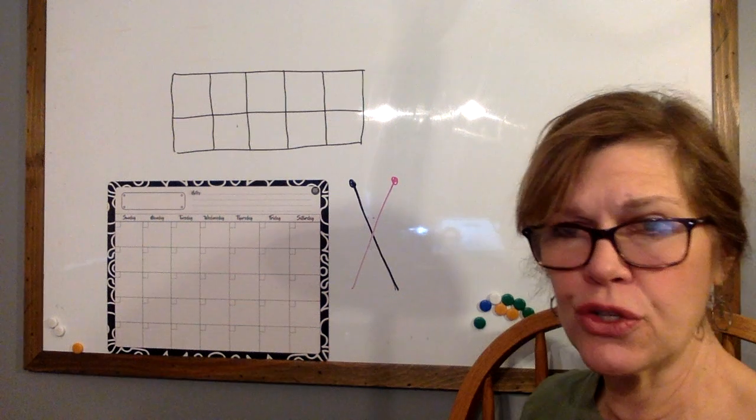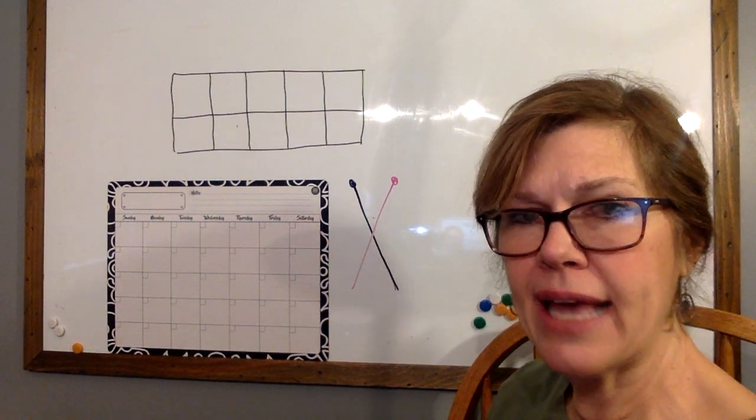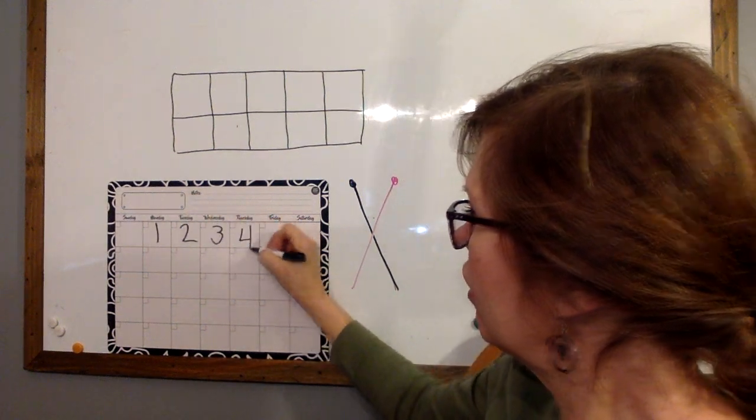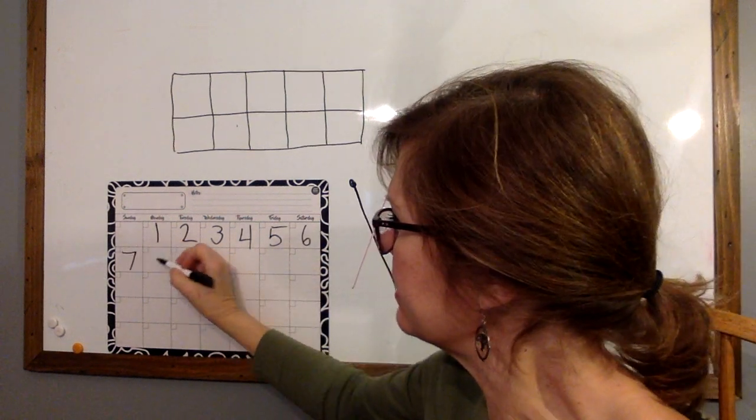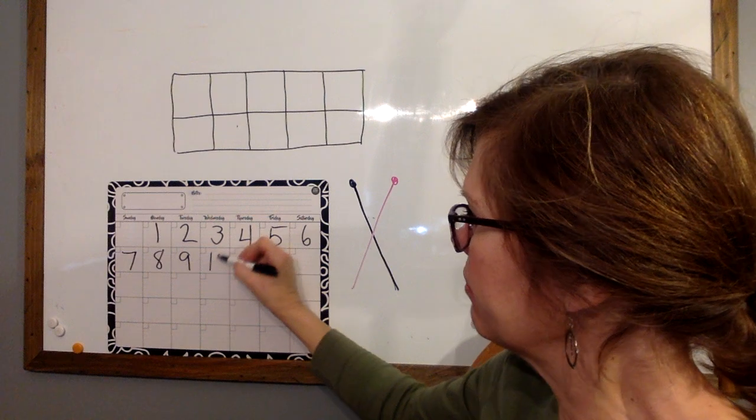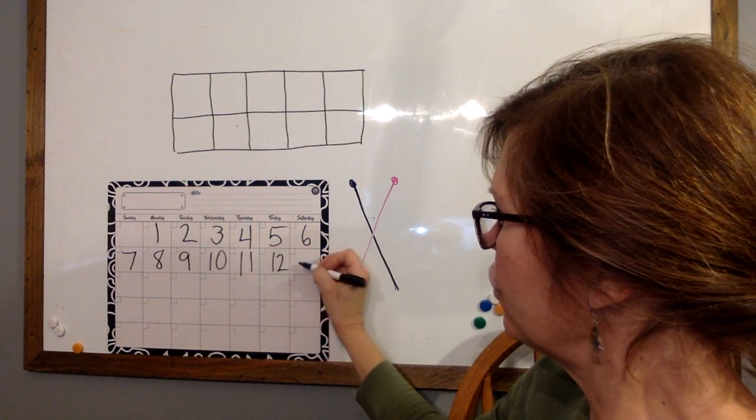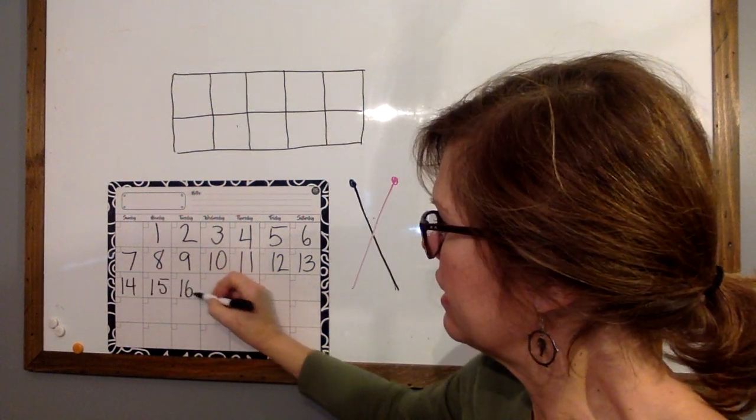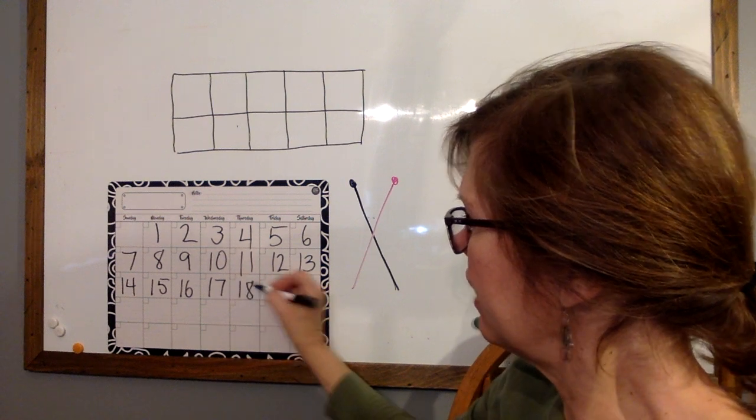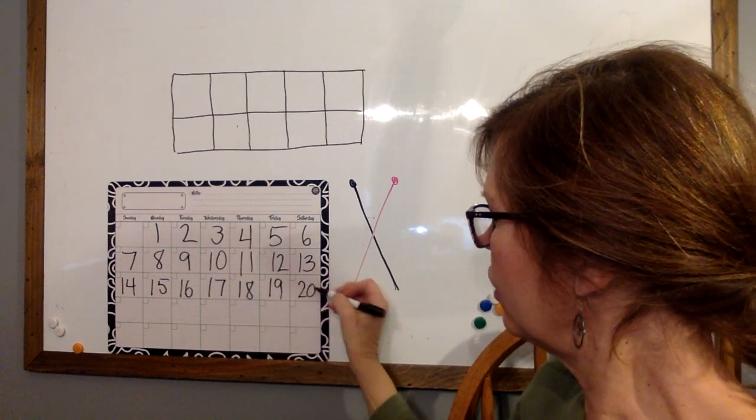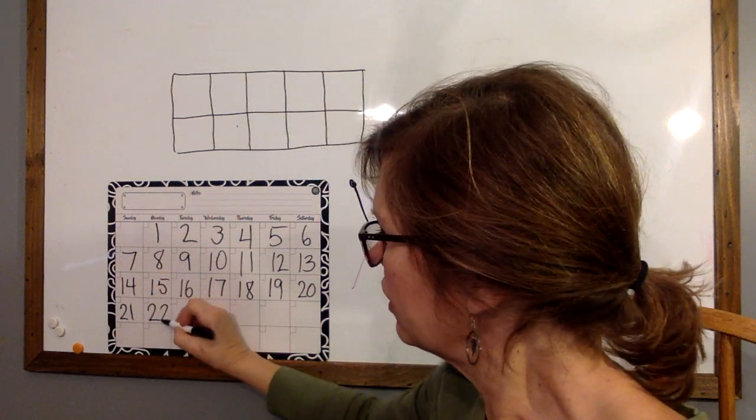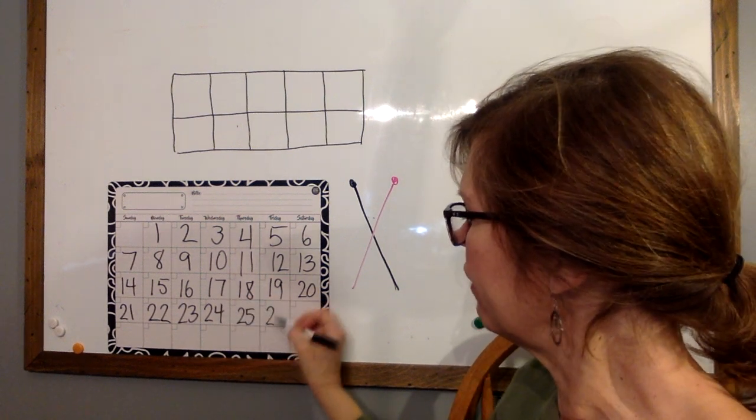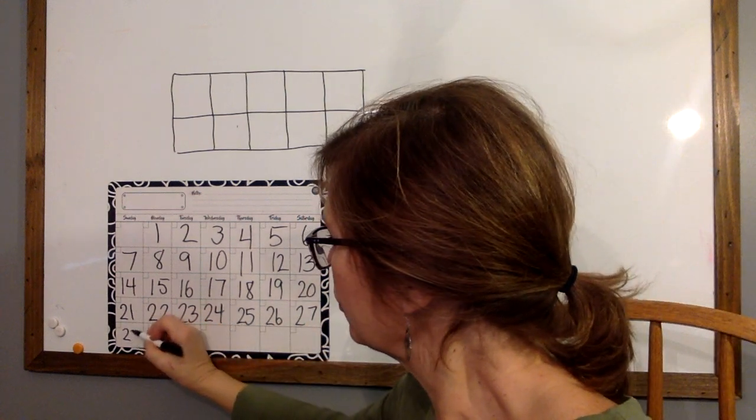All right. Today we're going to use our calendar to count to 28. So please follow along and count with me as I write the numbers. Are you ready? 1, 2, 3, 4, 5, 6, 7, 8, 9, 10, 11, 12, 13, 14, 15, 16, 17, 18, 19, 20, 21, 22, 23, 24, 25, 26, 27, 28.